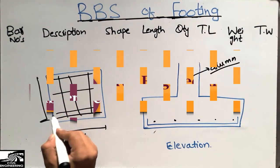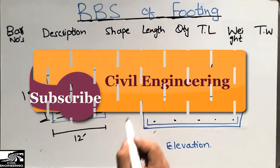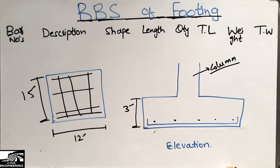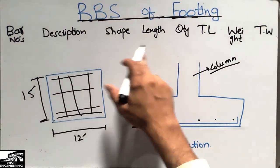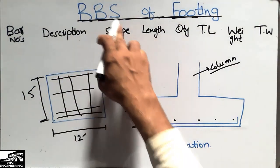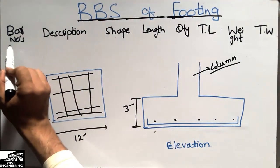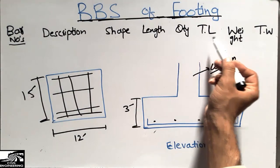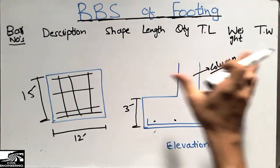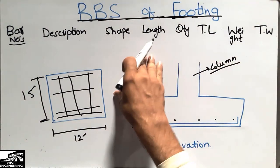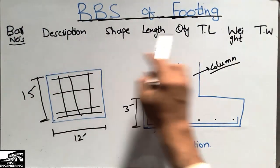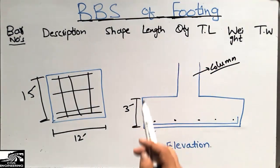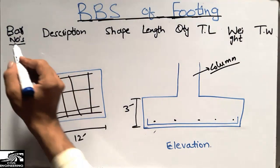The depth of the footing is supposed to be 3 foot. To understand the bar bending schedule of the footing, we should know these terms: the bar number — which bar is used — the description of the bar, the shape, the length of the bar, the total quantity, the total length, the weight per unit length, and the total weight. These terms are always used in any bar bending schedule, whether for a footing, a beam, or a column.